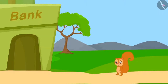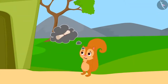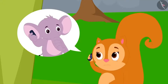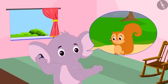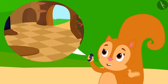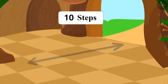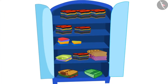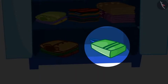Today, Chanda has gone to the bank for some important work, but she has forgotten some important documents back home. She immediately called Appu and asked him to bring the papers from her house. Appu asked her where he would find the papers. Chanda told him that as soon as he opens the main door and enters the house, he has to walk ten steps straight towards a blue cupboard. He will find the papers in the lowermost shelf of the cupboard in a packet.